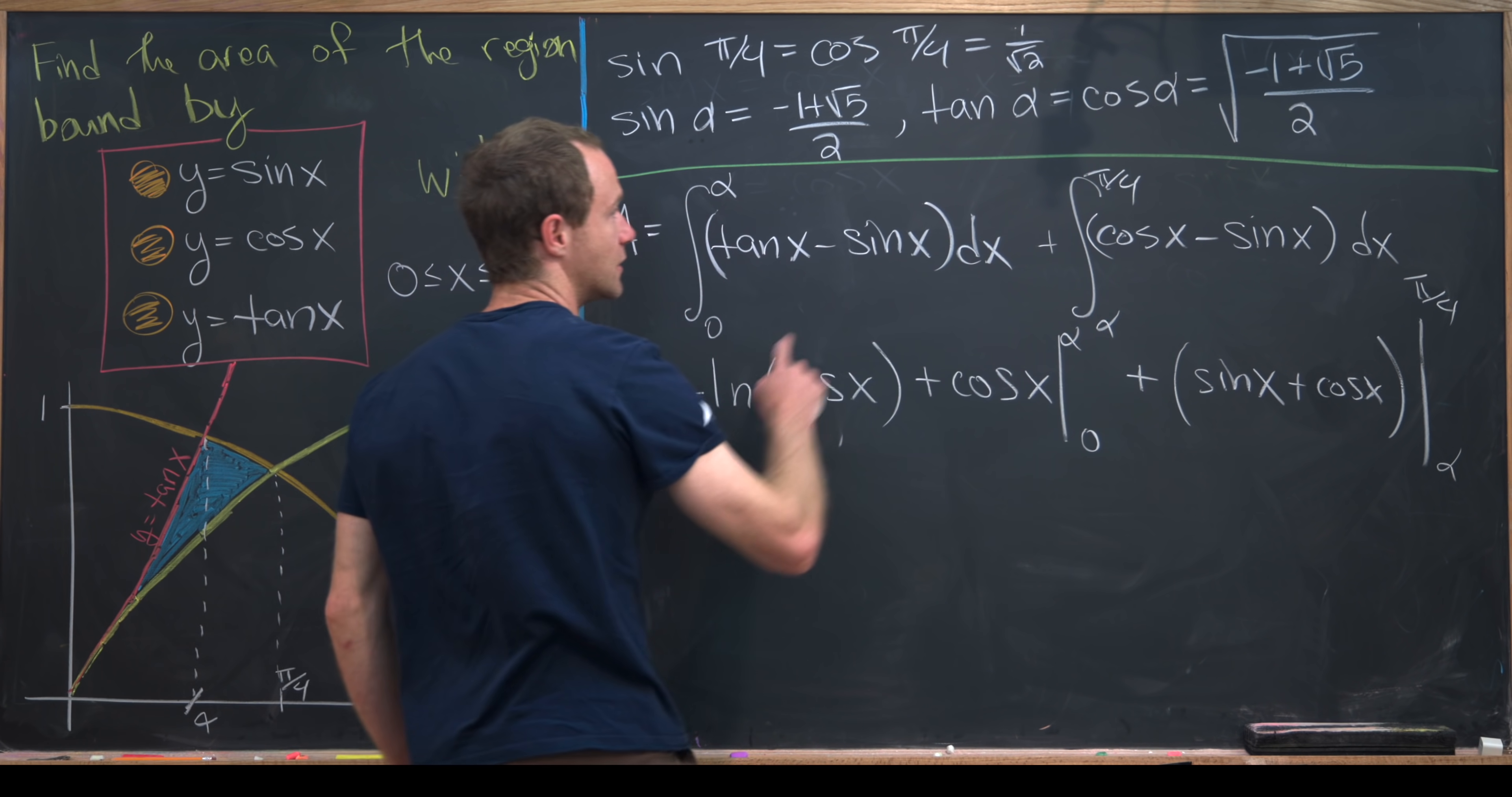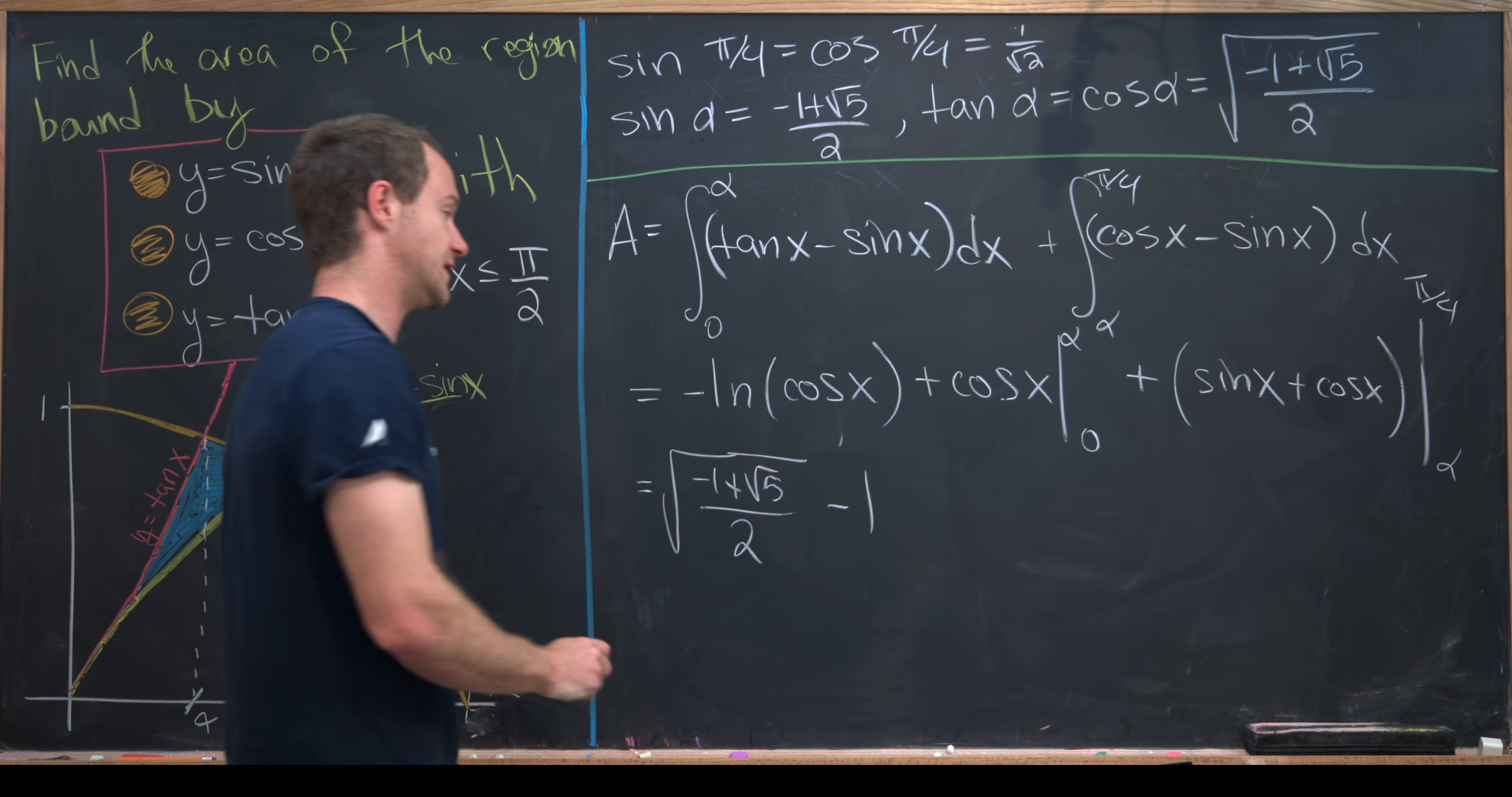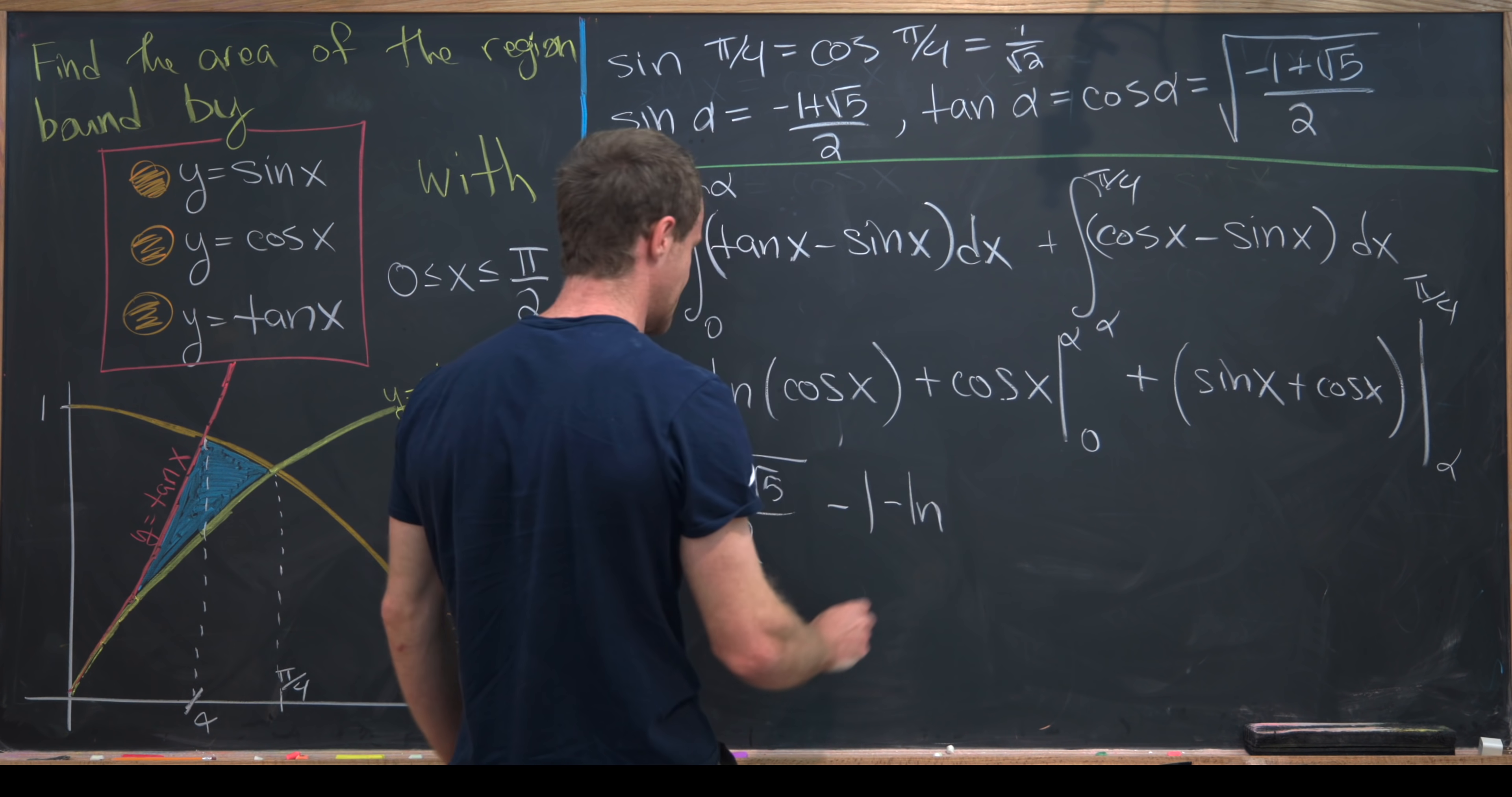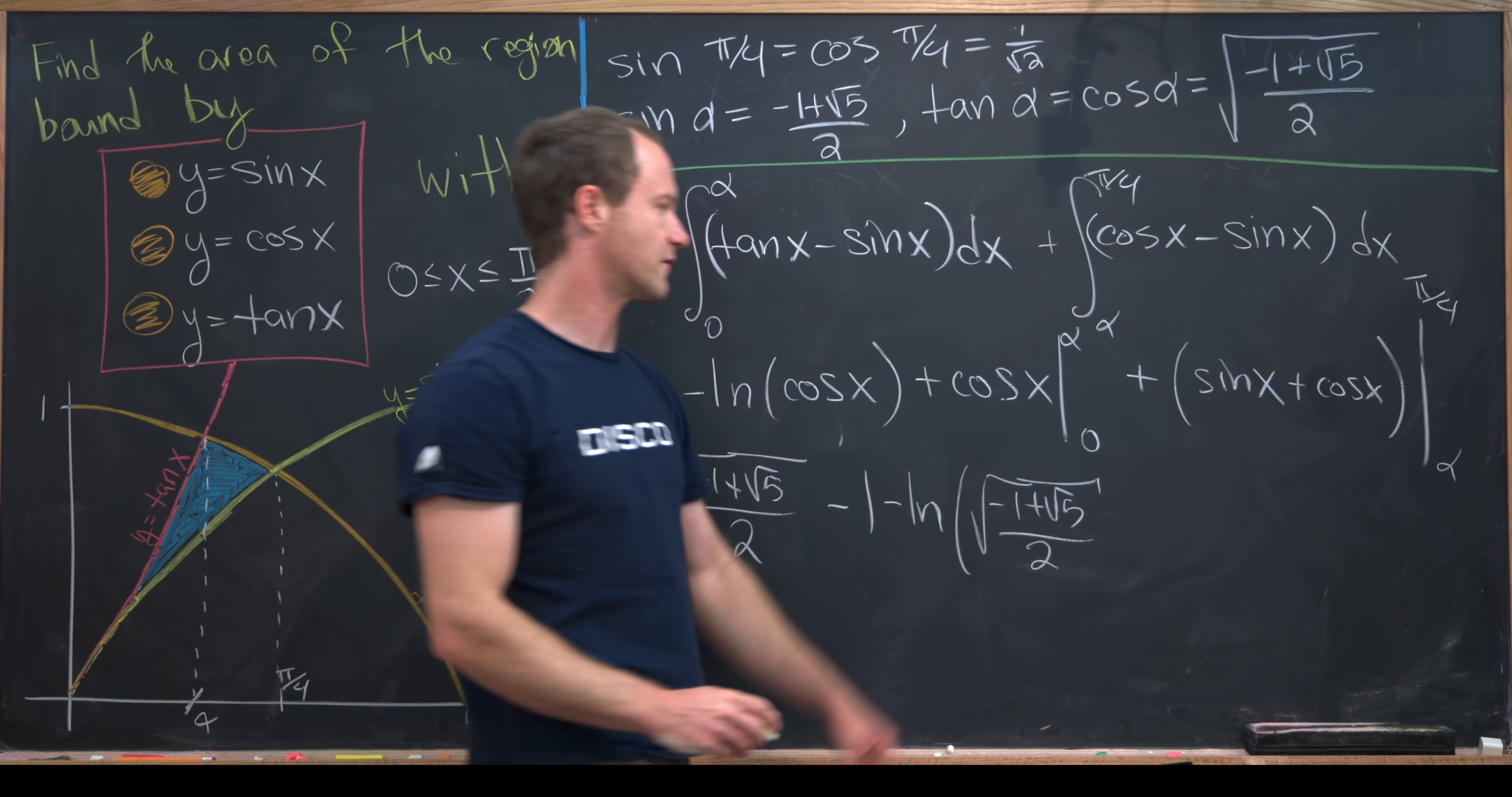If we plug alpha into cosine, we'll get the square root of minus 1 plus the square root of 5 all over 2. If we plug 0 into cosine, we'll get 1, so we need to subtract that. Next, if we plug alpha into cosine here, we have the same thing within the natural log. So that's minus natural log of the square root of 1 minus 1 plus the square root of 5 all over 2. Then if we plug 0 in here, we'll have the natural log of 1, which is zero. Then what do we get over here?